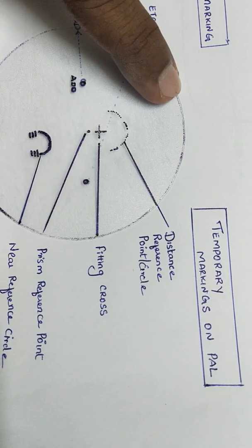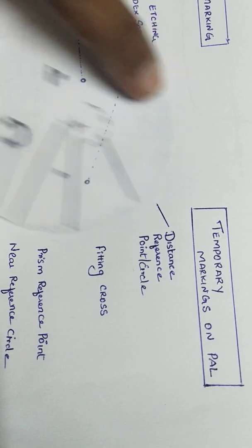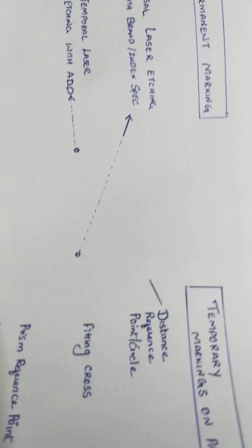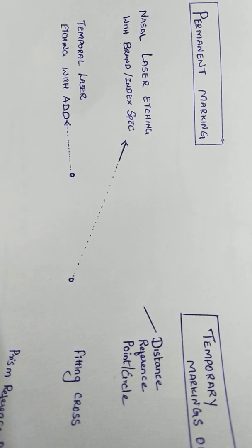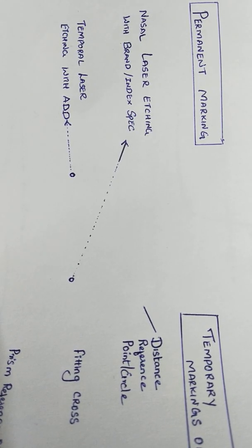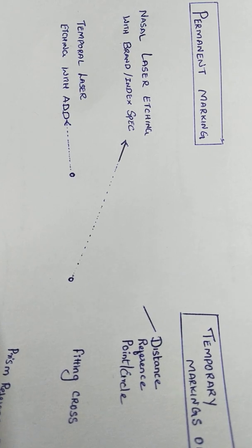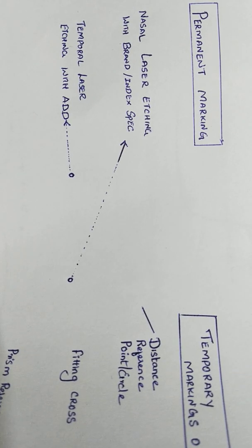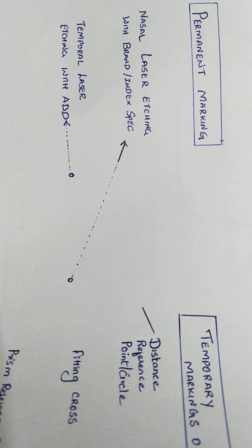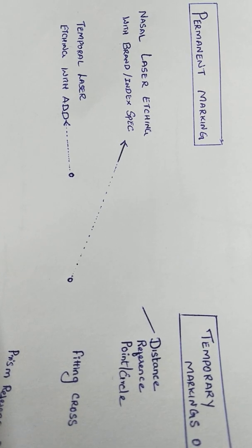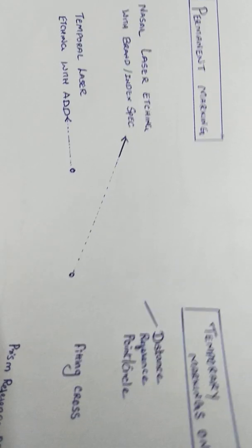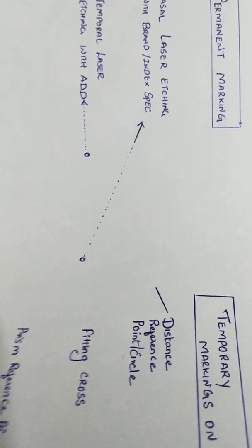Let us see the permanent marking. When I remove this, we are left with the two micro etching circles - one is at the nasal side, one is at temporal side. Nasal side etching has brand index specification, temporal side has add specification in most progressive lenses.